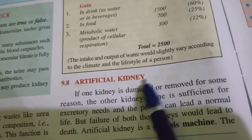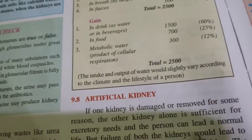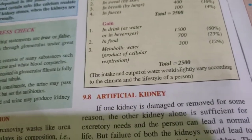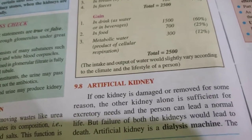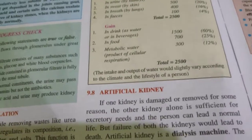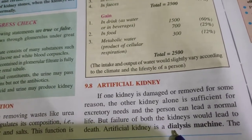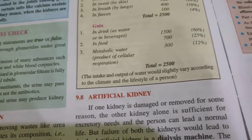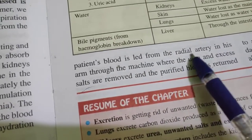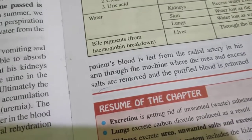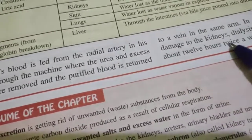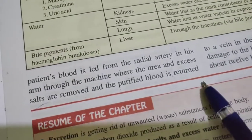Another term is artificial kidney. If one kidney is damaged or removed for some reason, the other kidney alone is sufficient for the excretory needs and the person can lead a normal life. But failure of both kidneys would lead to death, so in that condition the person is put on a dialysis machine — the artificial kidney. In dialysis, the patient's blood is taken from the radial artery in the hand, and through the machine, urea and excess salts are removed, and purified blood is returned to the vein in the same arm. This process is called dialysis.